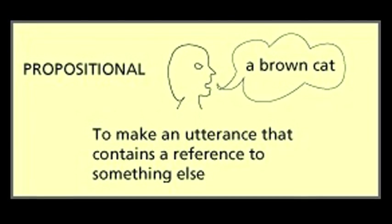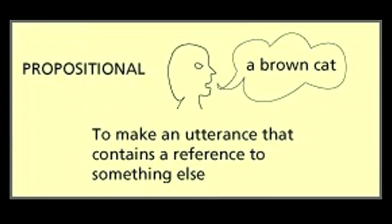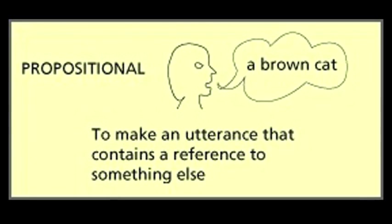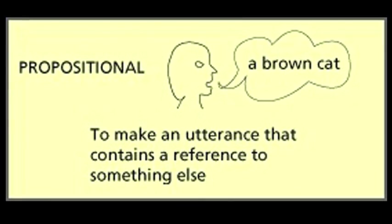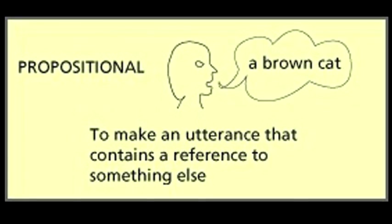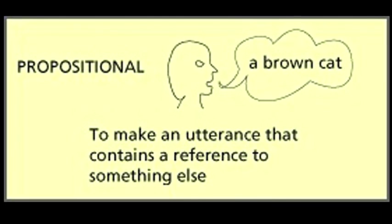J.L. Austin's second key term is propositional utterance. A propositional utterance is one that contains a reference to something else.